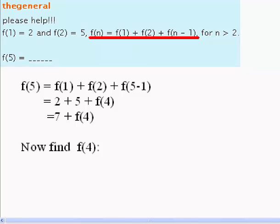Now we are left to solve for f(4). Again, using the generic equation given to us, f(4) = 2 + 5 + f(3). This equals 7 + f(3).